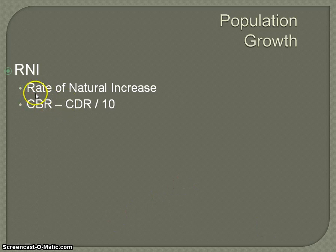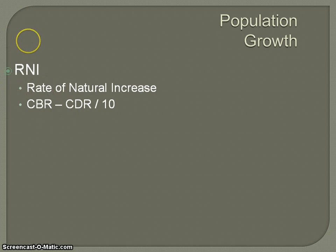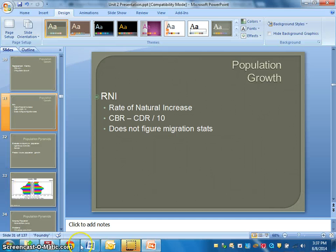The reason that's happening is that the crude birth rate, especially in less developed countries, is staying relatively high, while crude death rates are coming down — which is very positive. The problem is that women are still having lots of children, and we'll talk more about that when we get to the demographic transition model.